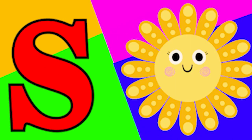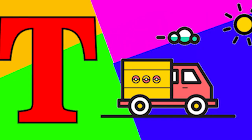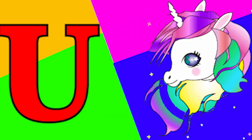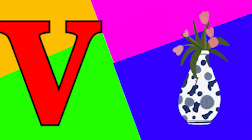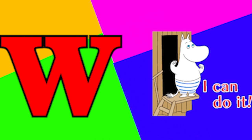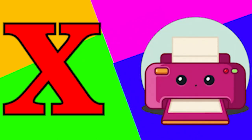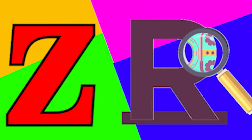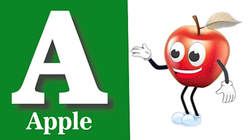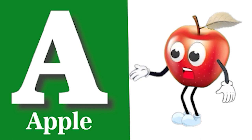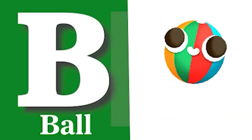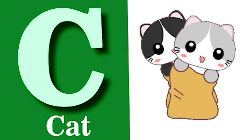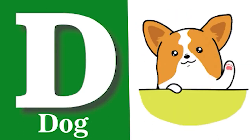S for sand, T for trab, U for unicorn, V for vase, W for whale, X for zero, Y for yellow, Z for zoo. A for apple, B for ball, C for cat, D for dog.